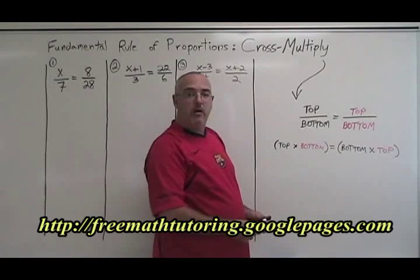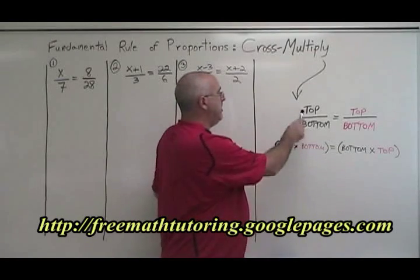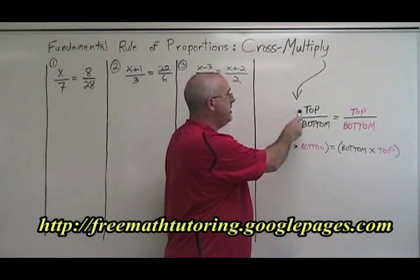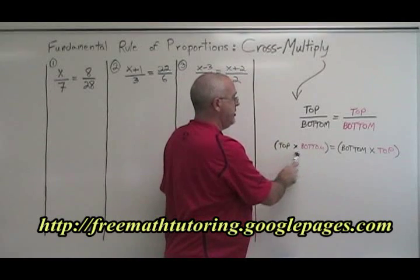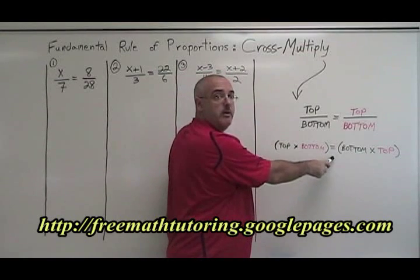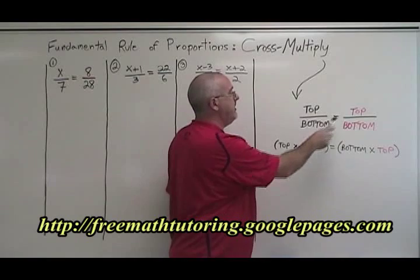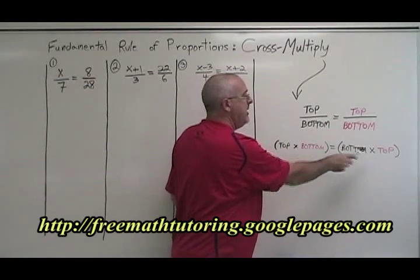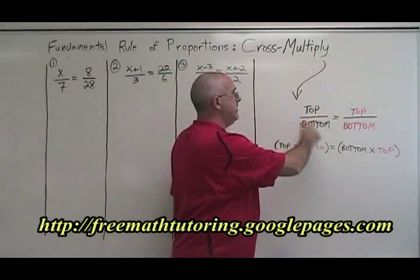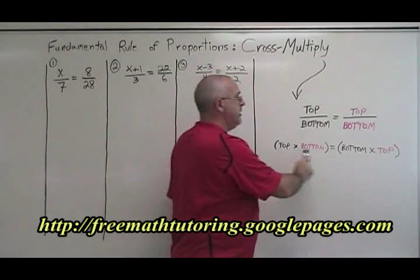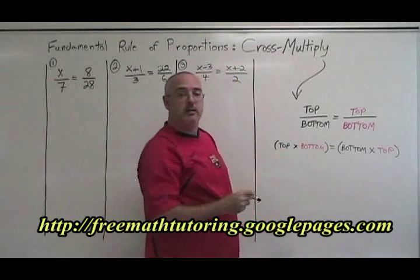What you do to apply cross multiplication is you multiply the top of the left fraction by the bottom of the right fraction. Then you put your equal sign and you multiply the bottom of the left times the top of the right. This converts your equation which has fractions into an equation that only has one line and is easier to solve.